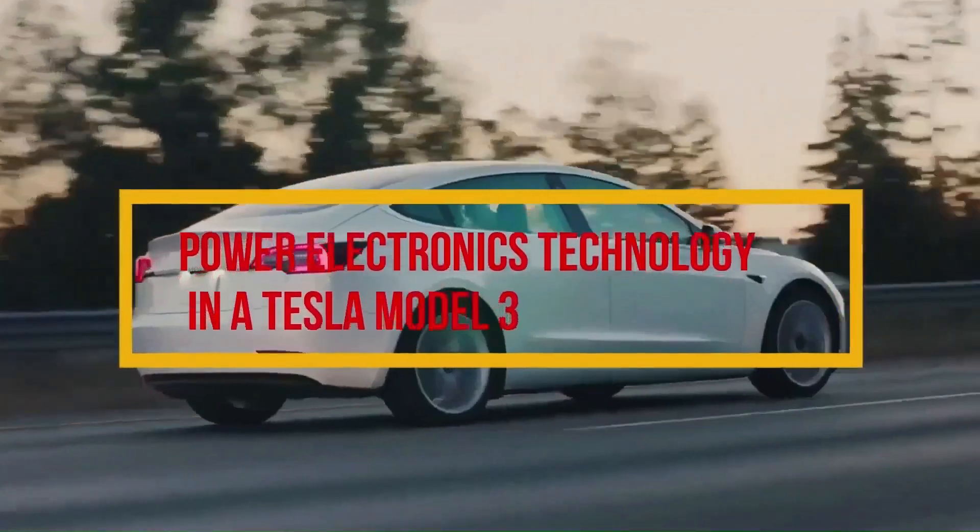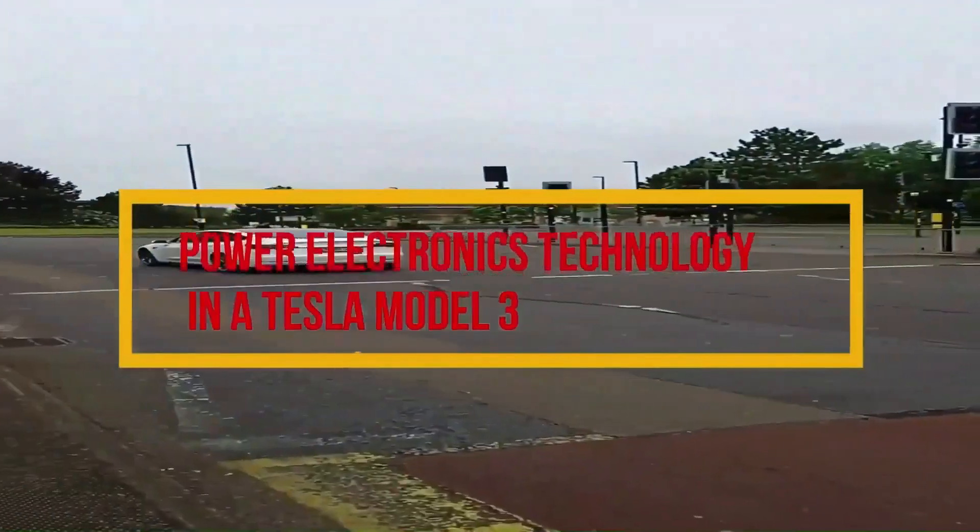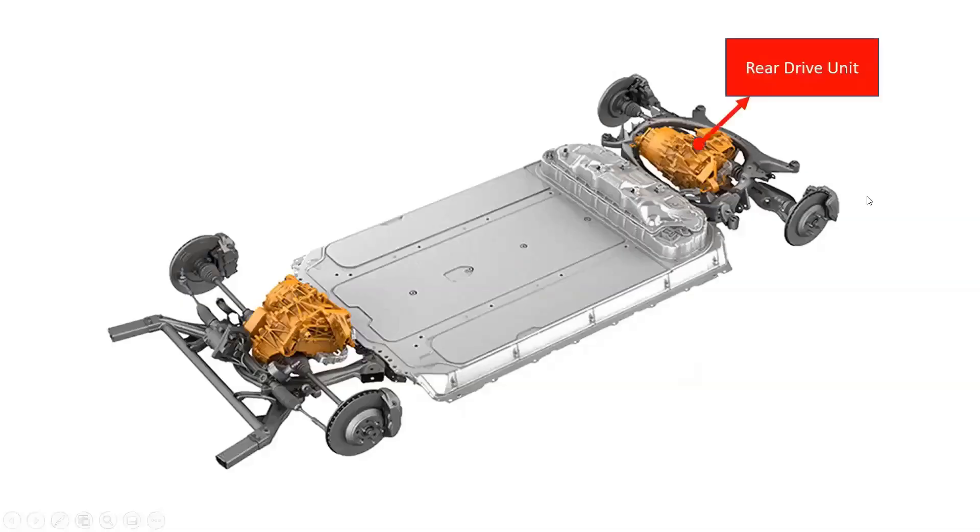Today, we will focus on the power electronics technology associated with Tesla Model 3. The rear drive unit is located between the rear wheels. The front drive unit, if equipped, is located between the front wheels.